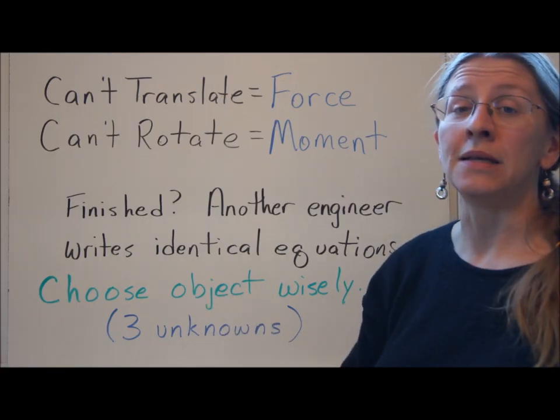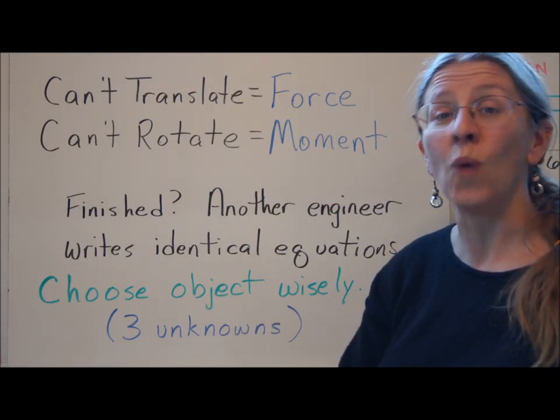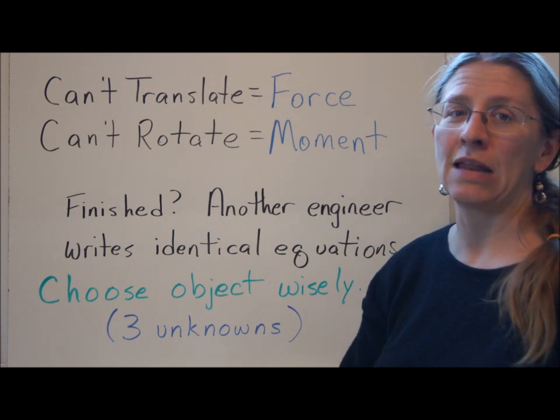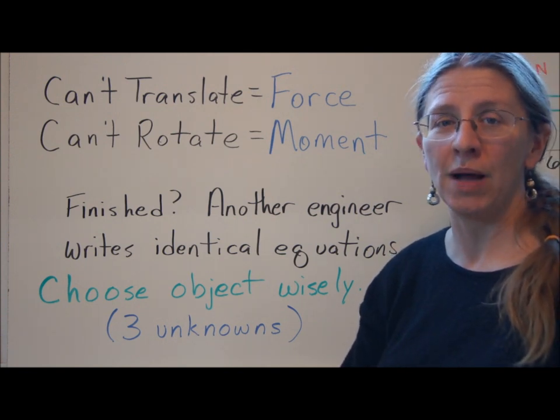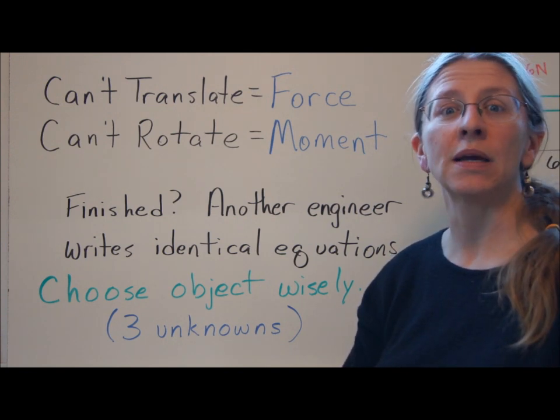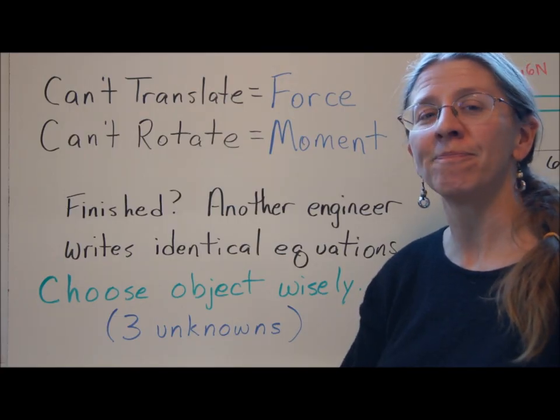And last but not least, make sure that you've chosen your object wisely. You're only going to get three equations of equilibrium for a rigid body in two dimensions. So try to pick an object where you only have three unknowns. Thanks!